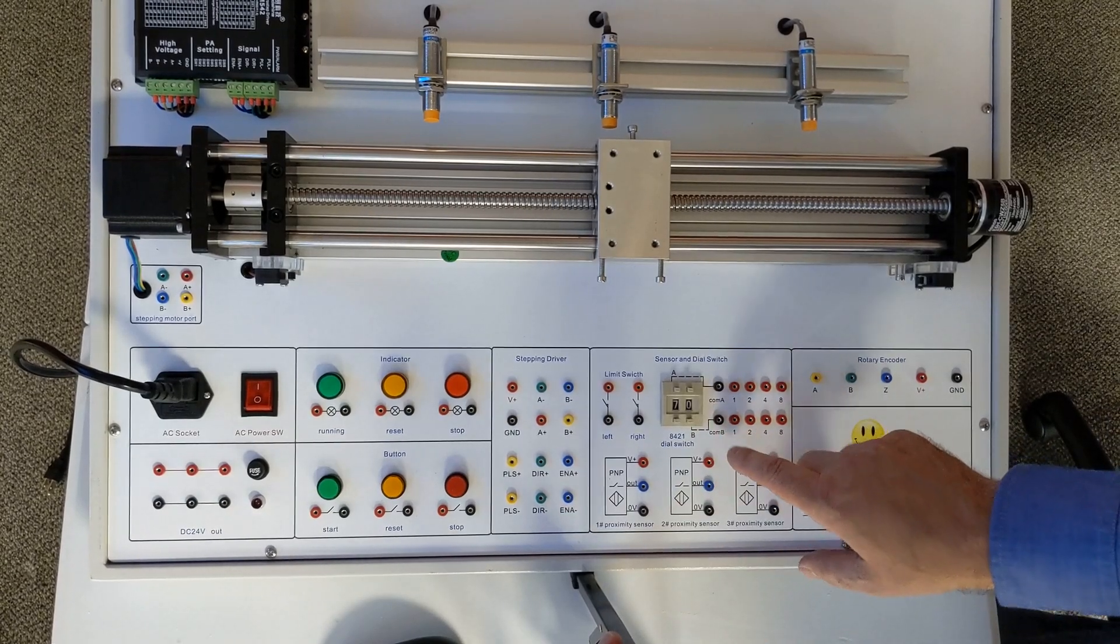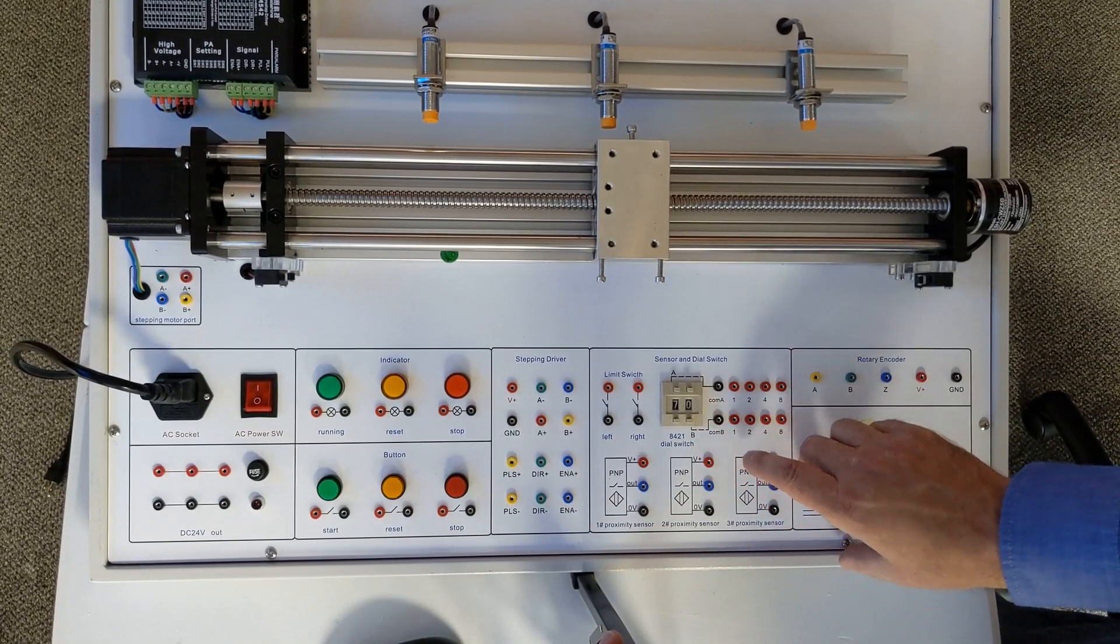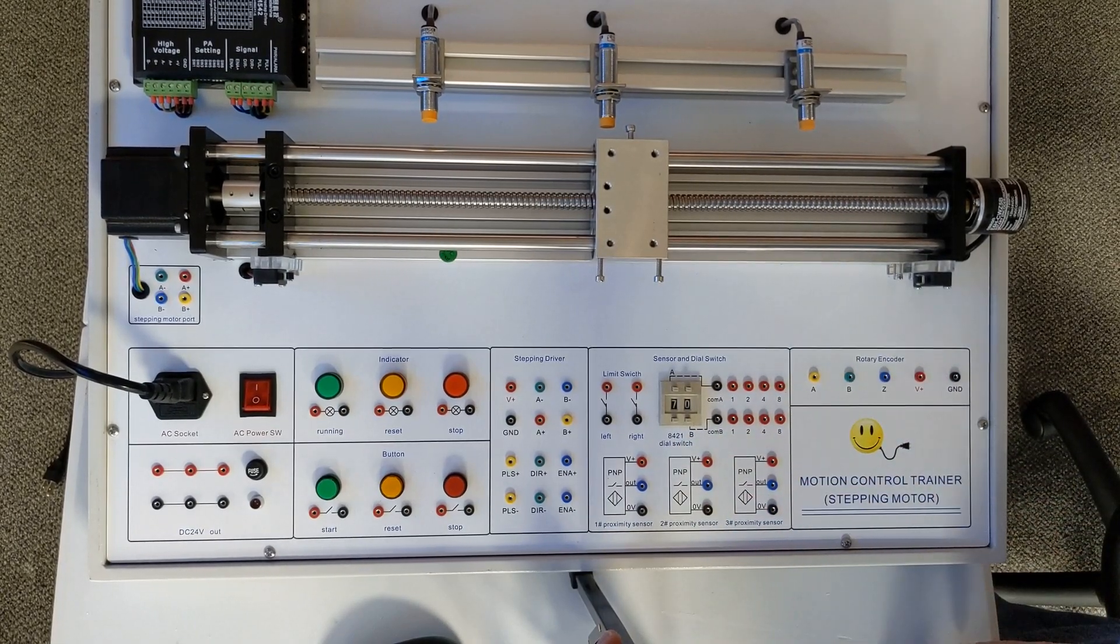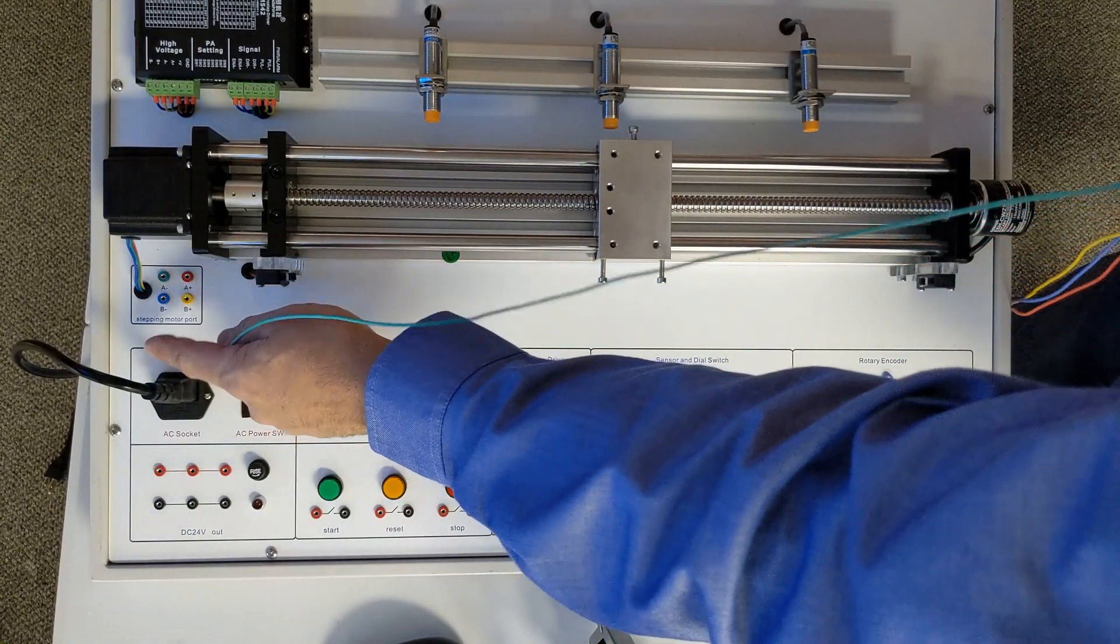Then we're going to use a pulse and direction to actually control where the motor moves. We're going to do an exercise before we even put the first wire to the PLCs using this dial switch to show how pulse and direction works.